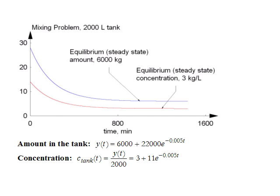And here are the graphs of these solutions. This is a mixing problem with a 2,000 liter tank. Volume is constant because the input and output flow rates are equal, so there's no extra volume being added or taken away. We have an equilibrium solution of 6,000 kilograms. It starts off higher, I think it starts with 28,000, and decreases down to the 6,000. The equilibrium steady state in terms of concentration is 3 kilograms per liter. The only difference between these two is the division by the constant volume of 2,000.